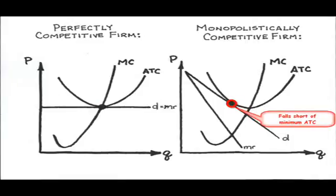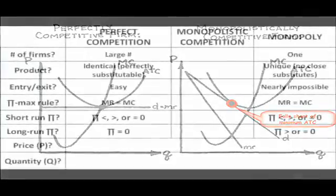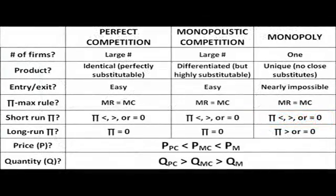To wrap up, let's do a quick recap of this market structure, as compared to perfect competition and monopoly. There are a large number of firms, more like perfect competition. With respect to the product produced, it's not identical across firms, as with perfect competition, but neither is it unique.